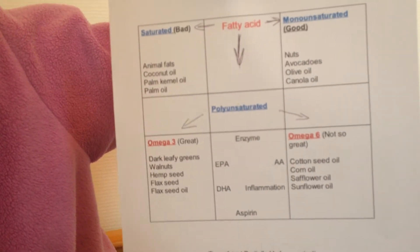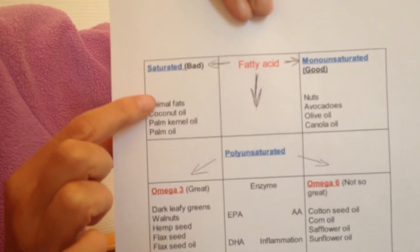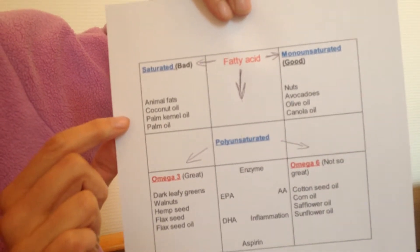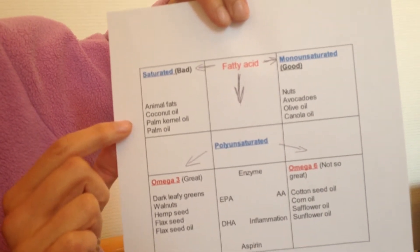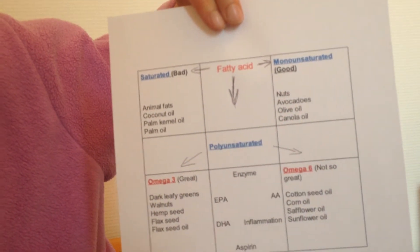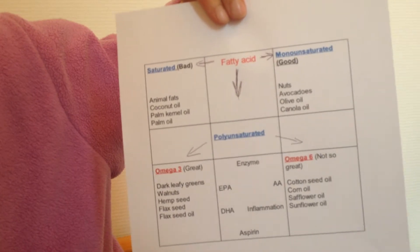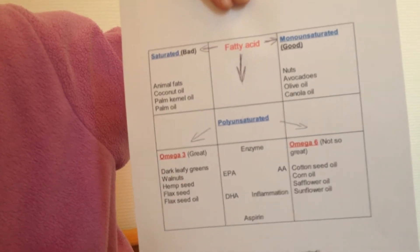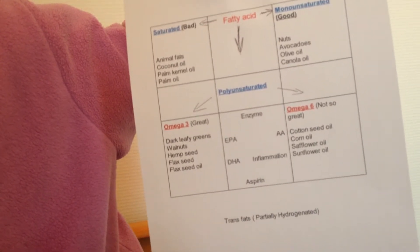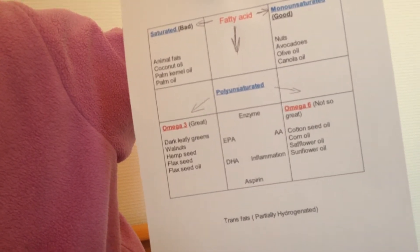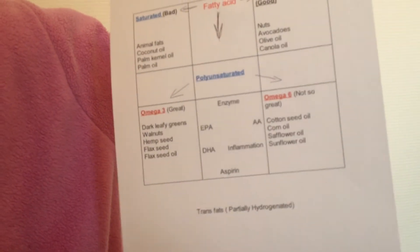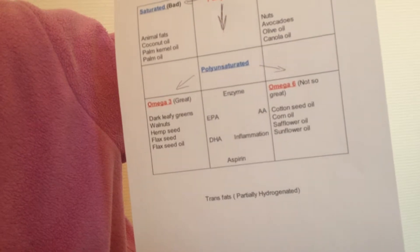How good are these fats? Saturated fat is said to be bad — examples include animal fat, coconut oil, palm kernel oil, and palm oil. Monounsaturated fat is good; sources include nuts, avocados, olive oil, and canola oil. Omega-3 is great; sources include walnut, hemp seed, and flax seed. Omega-6 is not so great; sources include corn oil and sunflower oil.